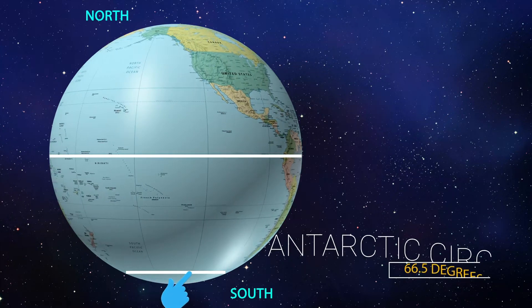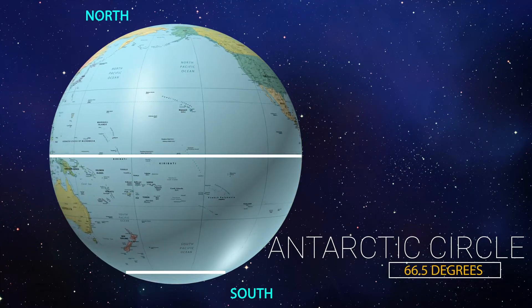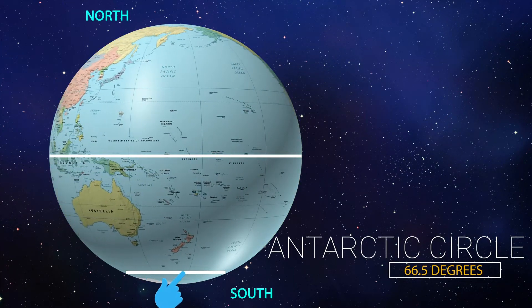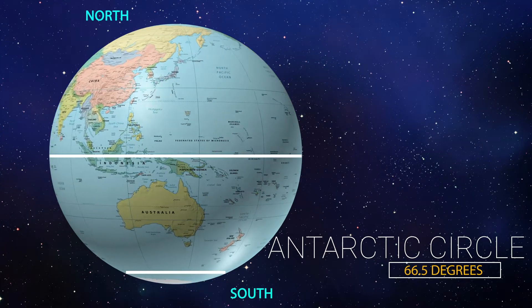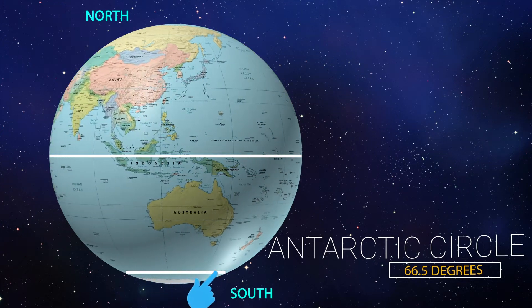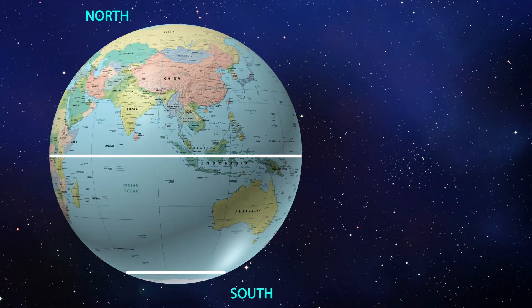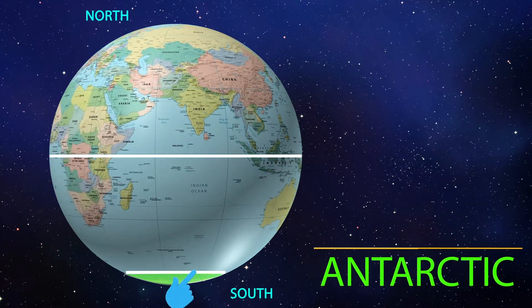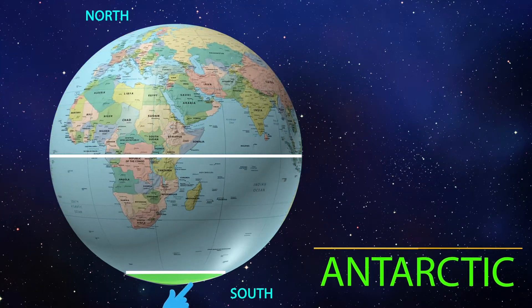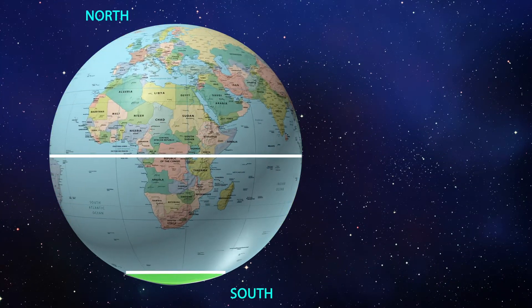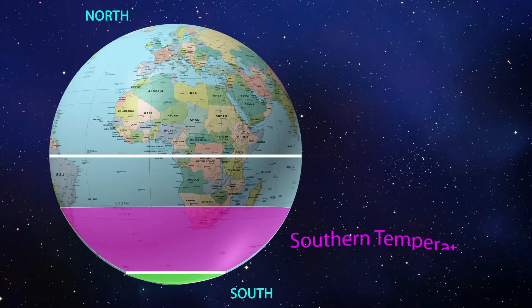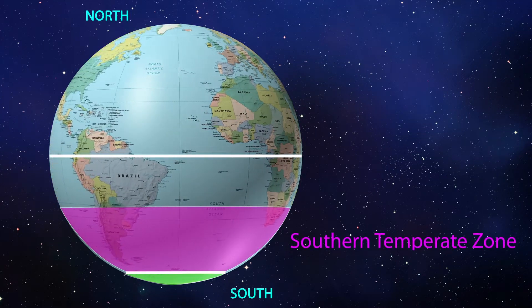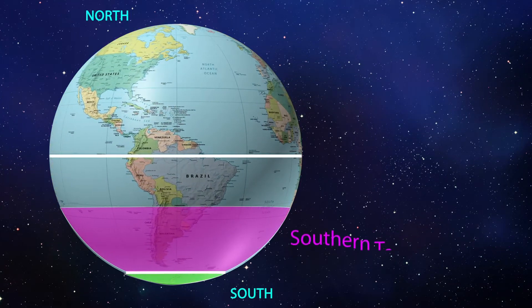The Antarctic Circle is a parallel of latitude on the earth at approximately 66.5 degrees south of the equator. The region south of the circle is known as the Antarctic, and the zone immediately to the north is called the Southern Temperate Zone.